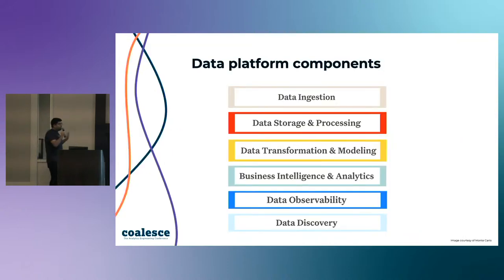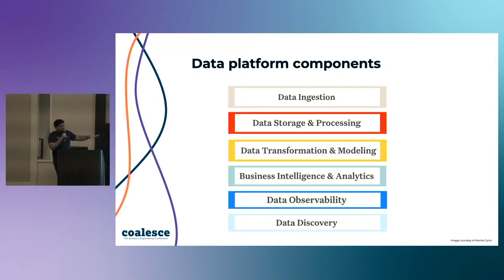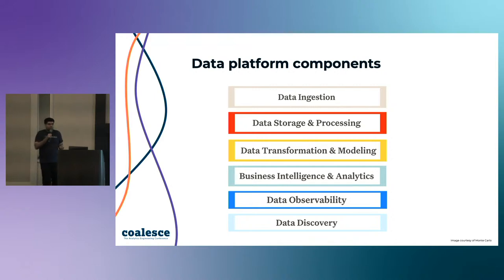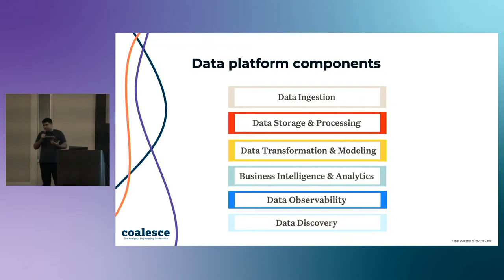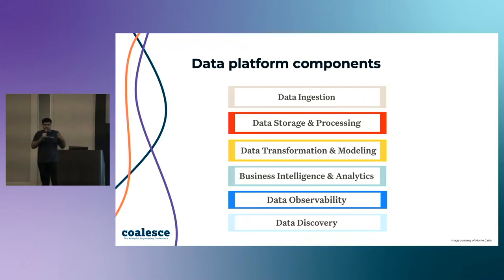Let's walk through some of the core components that make up pretty much every data platform. The first is ingestion. In any modern data platform, there will be a need to ingest data from one system to another — this eventually becomes your ETL or ELT pipelines. There are lots of popular tools to help, like Fivetran, Stitch, Kafka, and Kinesis. You can also build custom code to ingest from internal and external sources. One important consideration is orchestration and workflow automation, with tools like Airflow, Prefect, and Daxter.